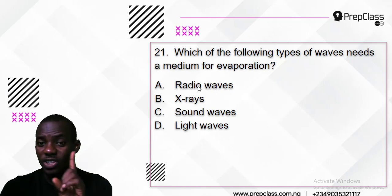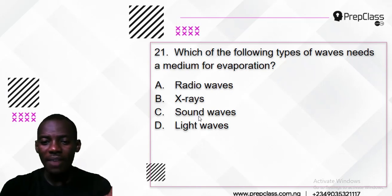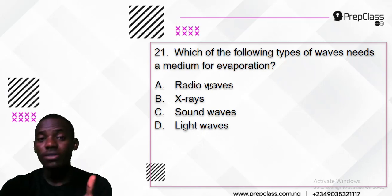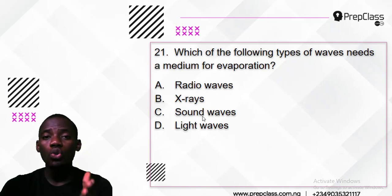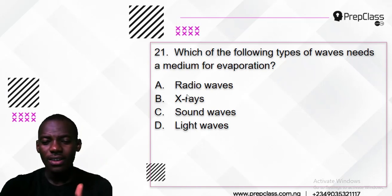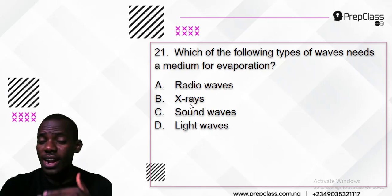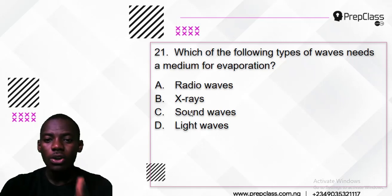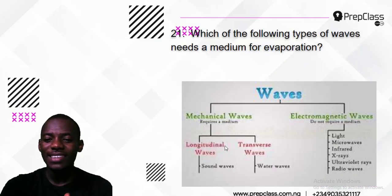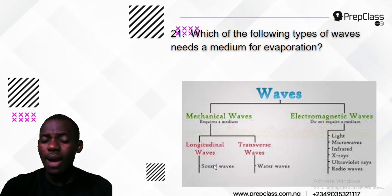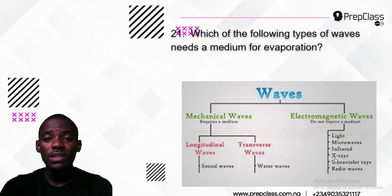So Re is radio wave, I is infrared — we don't have infrared here. Vo is visible light, and that light doesn't need a medium, so light is out. Radio wave is out. Visible light is out. Ultraviolet ray is not there — it's out. X-ray is also out. G is gamma — they are all electromagnetic waves and don't need a medium. The only one that does need a medium is sound wave, and that is the answer. Sound wave is a type of mechanical wave — a longitudinal wave — that needs a medium, mostly air.